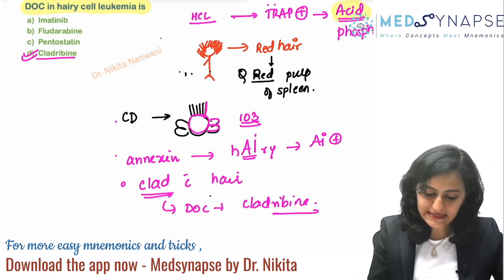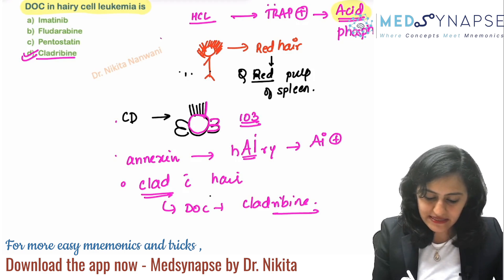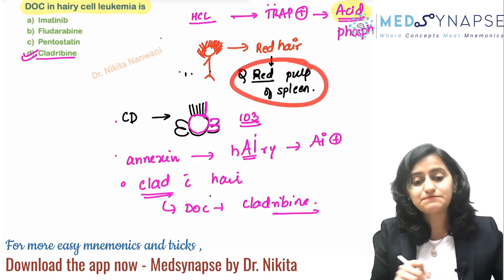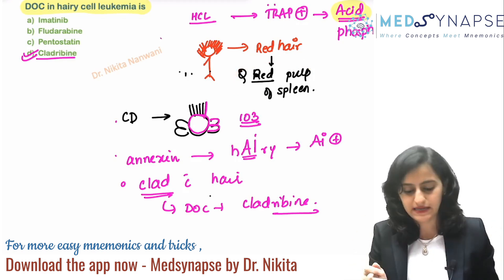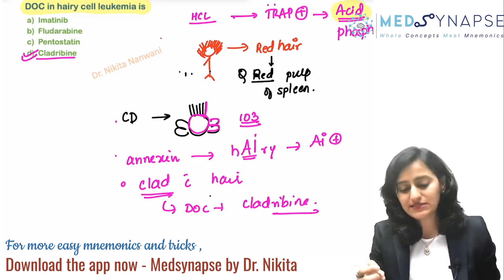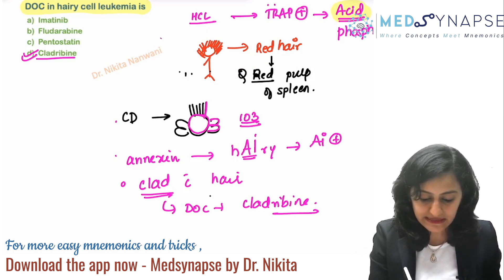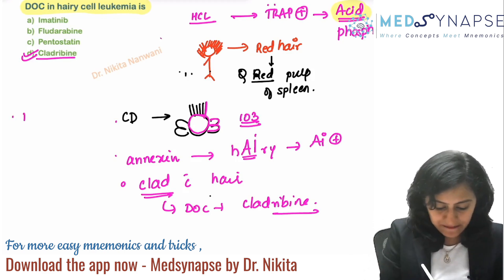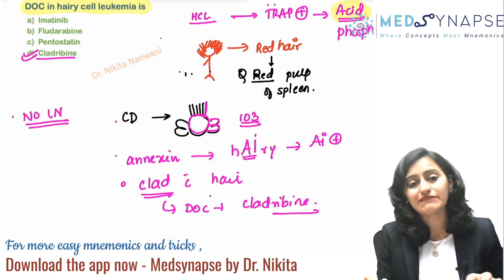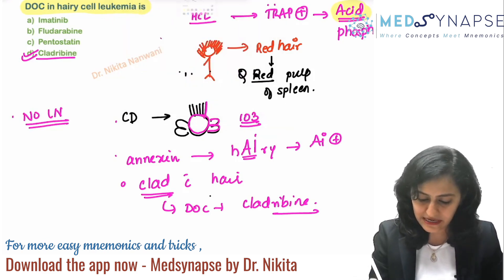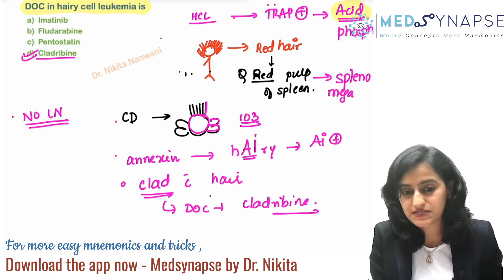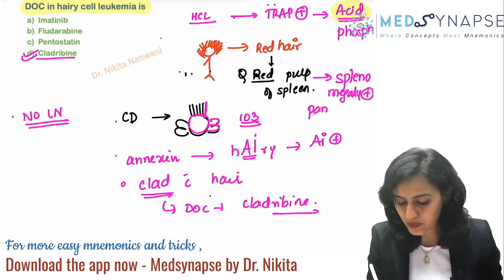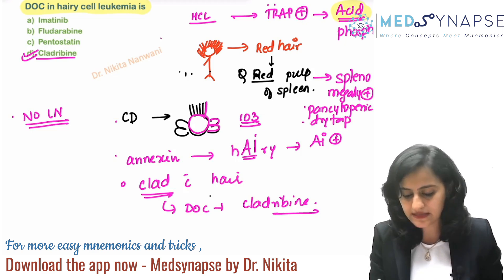An extra edge point: because the disease affects the red pulp of the spleen and not the white pulp where the lymph node area is, you would not see significant lymphadenopathy in the manifestation. The patient will not have lymphadenopathy, but the spleen is definitely involved — the red pulp of the spleen is involved, so splenomegaly is definitely going to be there.